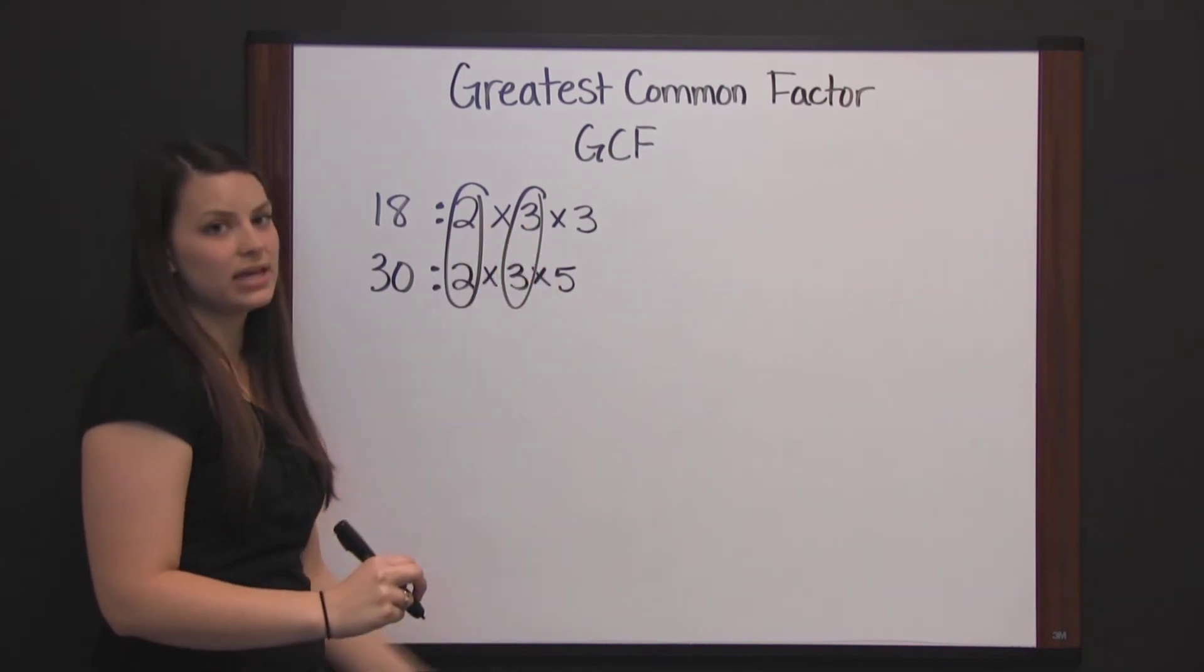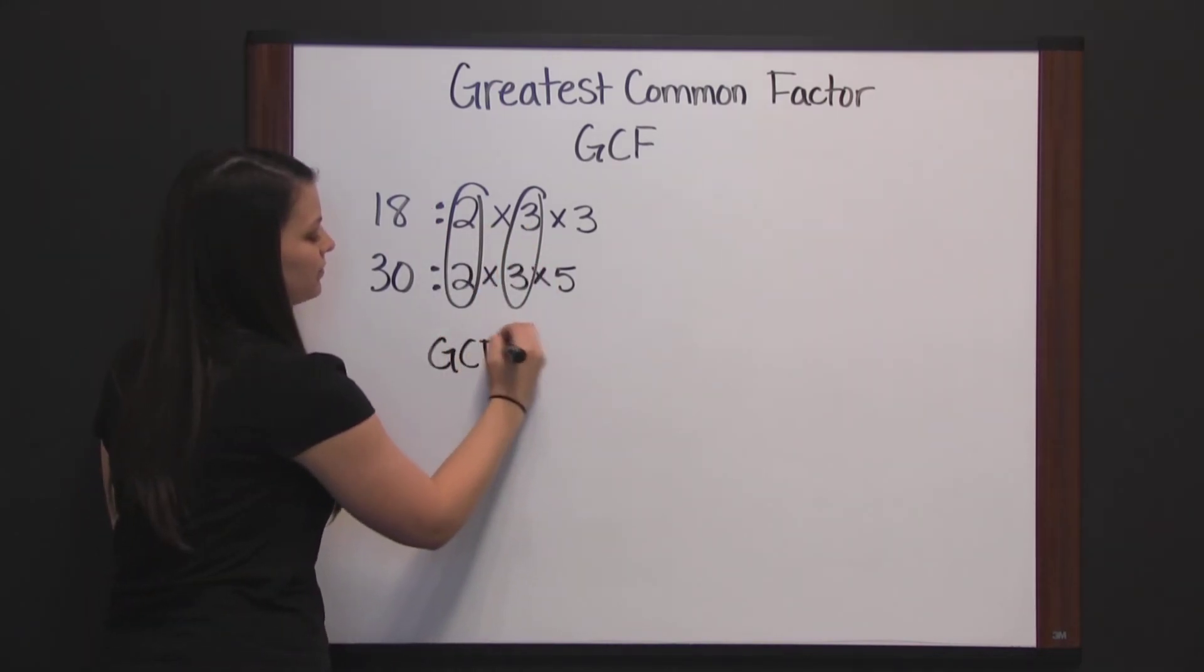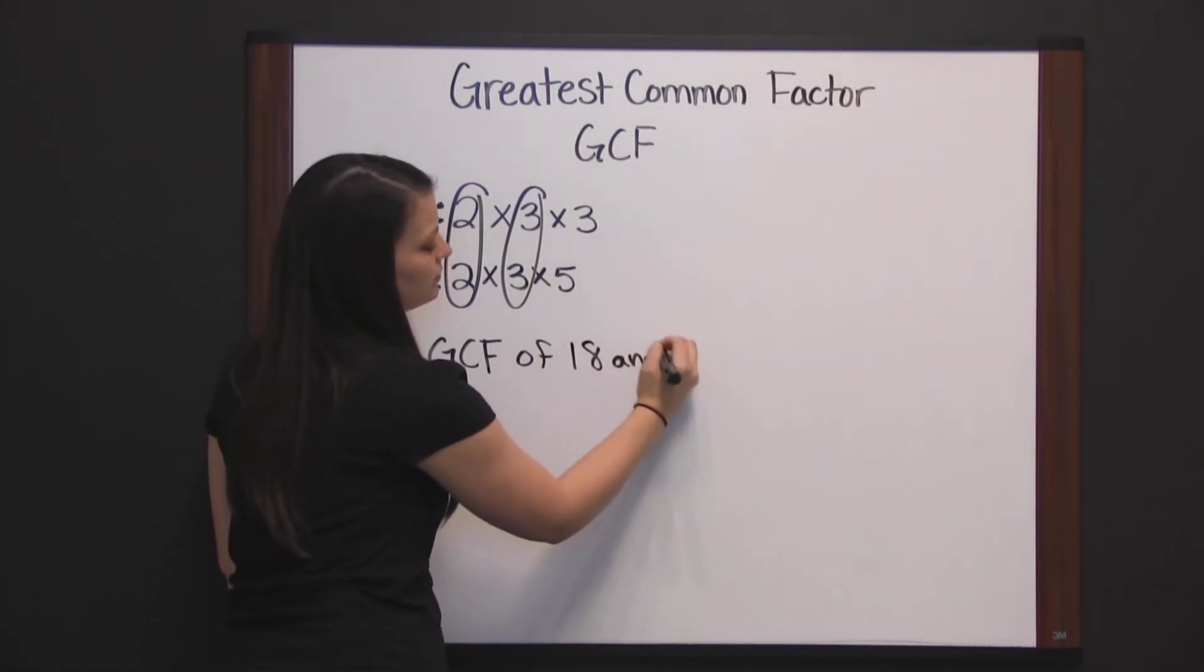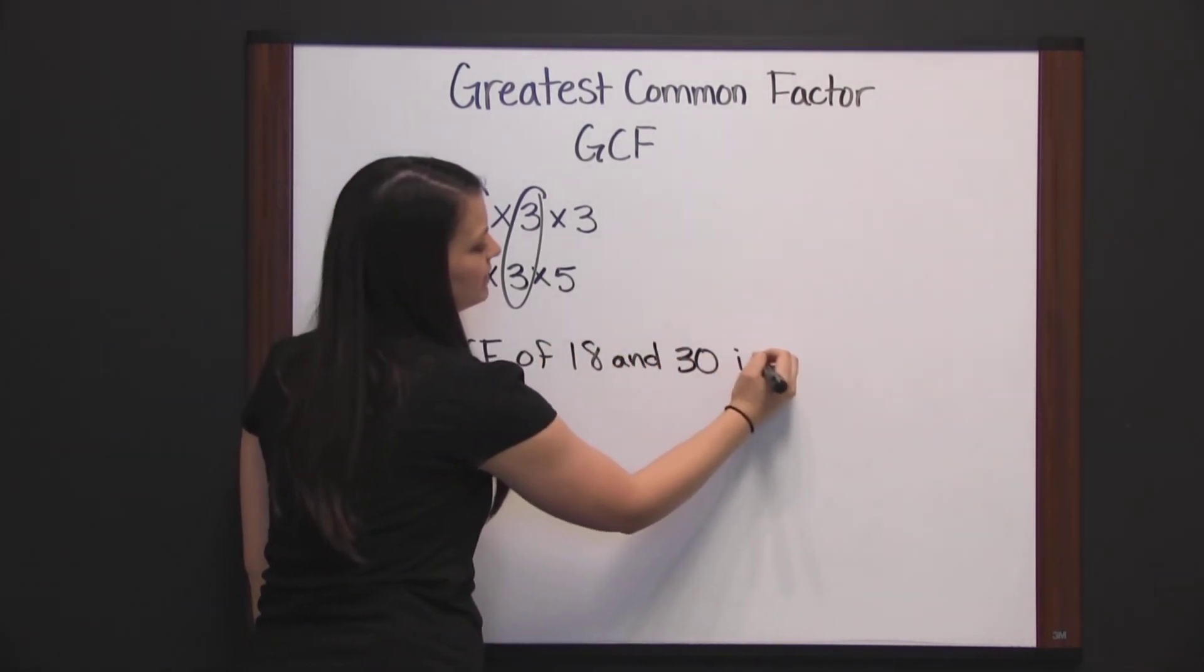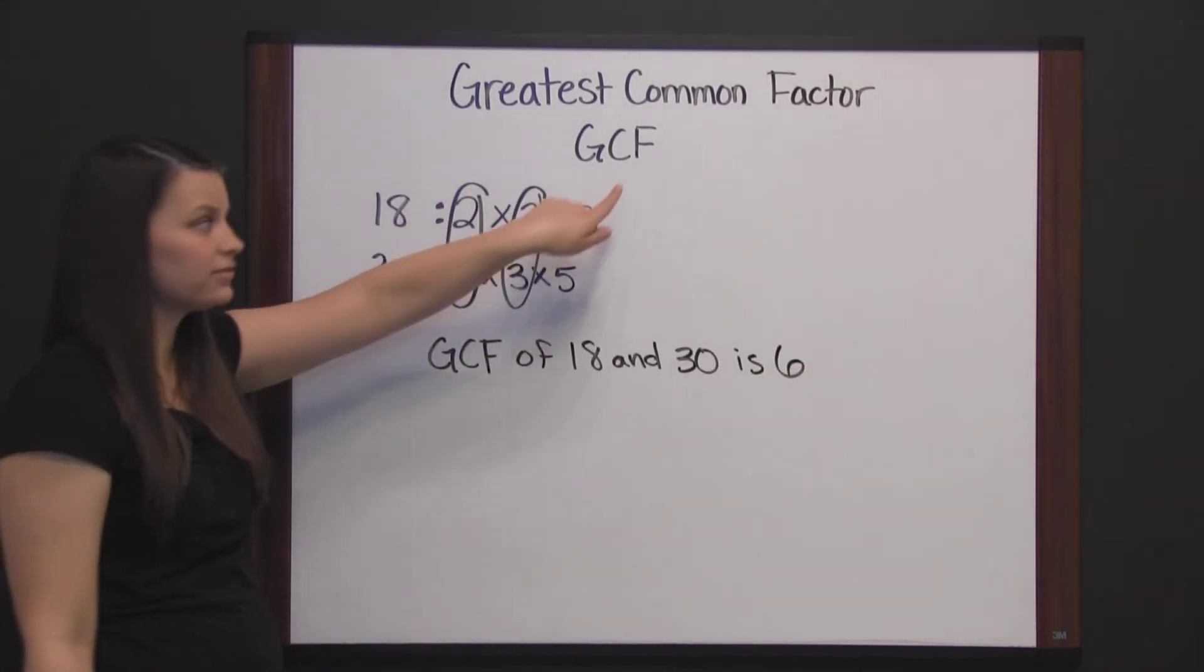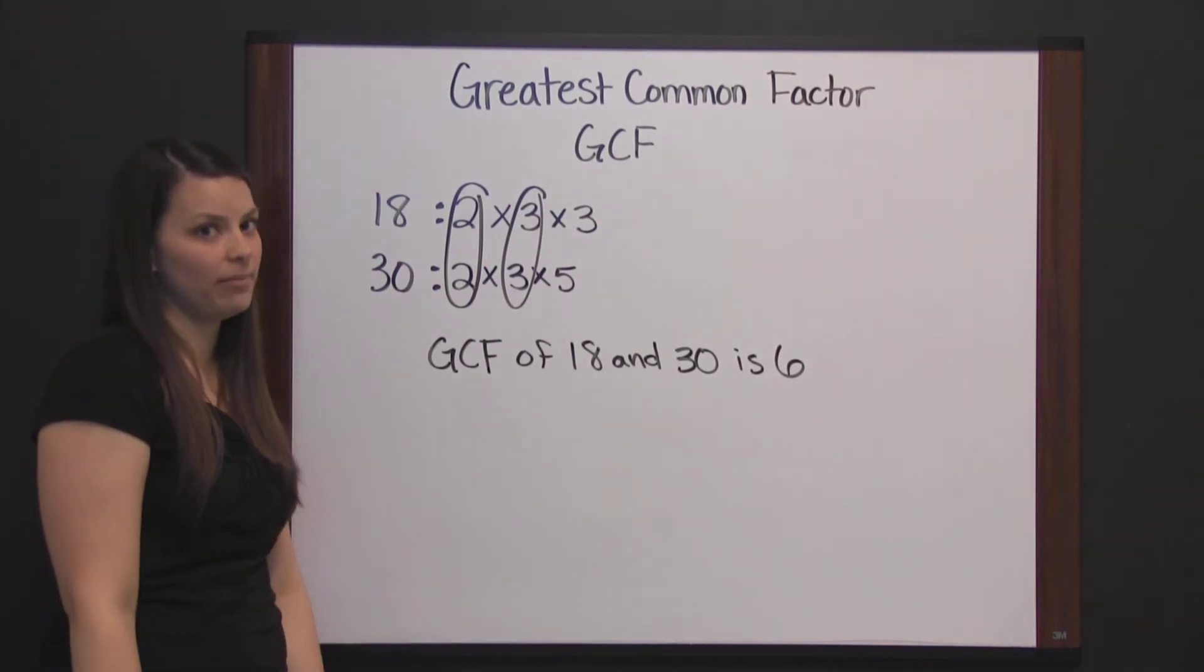Two times three is six. So the GCF of eighteen and thirty is six. Six is the largest factor that these numbers have in common.